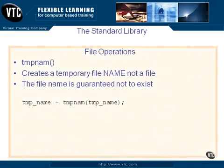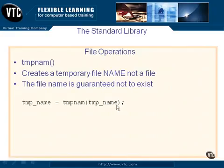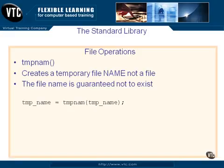Tmpnam creates a temporary file name — notice the 'e' is missing off the end, and that's on purpose. It does not create the file. The file name, though, is guaranteed not to exist should you choose to create it with an F-Open on that particular file name. You pass tmpnam a string pointer to a buffer that is at least long enough to hold the string name. There is a constant called TMP_MAX, so tmpnam has to point to a buffer of TMP_MAX size to carry the file name. If you don't pass a pointer to it, it will return a pointer to a buffer containing that name.